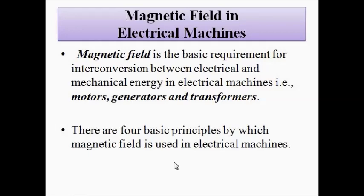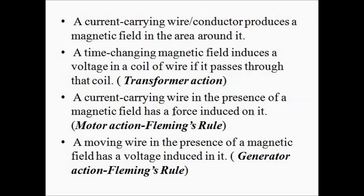There are four basic principles by which the magnetic field is applied in electrical machines. The first: any current-carrying conductor or wire produces a magnetic field — Fleming's rule. The second: a time-changing magnetic field induces a voltage in a coil as it passes through that coil, which is the basis of transformer action — expressed as dΦ/dt. The third: a current-carrying wire in the presence of a magnetic field experiences a force and tends to rotate, which is the basis of motor action — Fleming's left-hand rule.